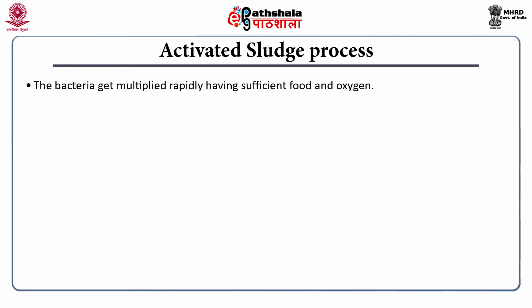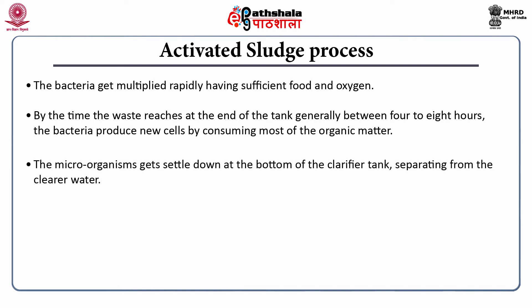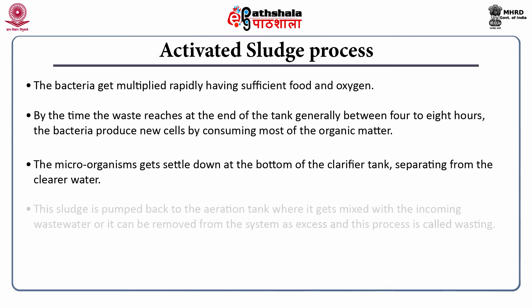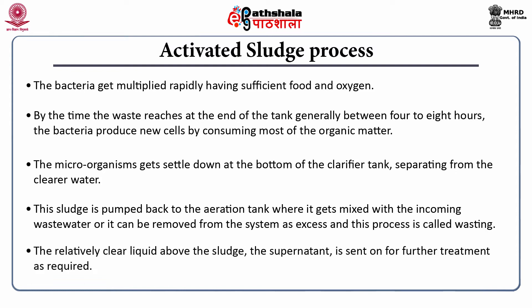In the activated sludge process, bacteria get multiplied rapidly with sufficient food and oxygen. By the time the wastewater reaches the end of the tank — generally between 4 to 8 hours — the bacteria produce new cells by consuming most of the organic matter. The microorganisms settle at the bottom of the clarifier, separating from the clear water. This sludge is pumped back to the aeration tank or can be removed from the system as excess — a process called wasting. The relatively clear supernatant is sent on for further treatment.